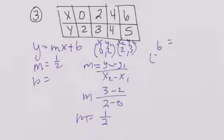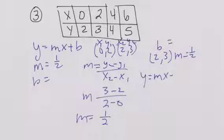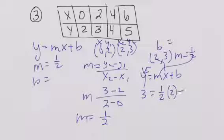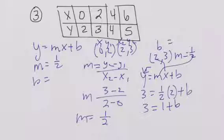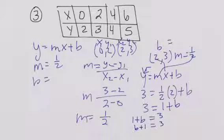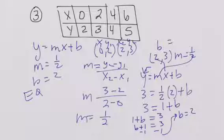For our B, we're going to need an ordered pair, so we'll take (2, 3) and our slope is one-half. Y equals MX plus B. We put 3 in for Y, one-half in for M, and 2 in for X plus B. 3 is equal to 1 plus B. We do symmetrical: 1 plus B is equal to 3, then commutative property gives B plus 1 is equal to 3. Zero pair out the 1, so B is equal to 2. Our equation is Y is equal to one-half X plus 2.